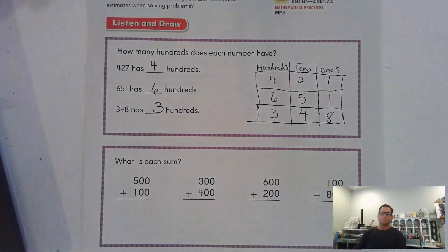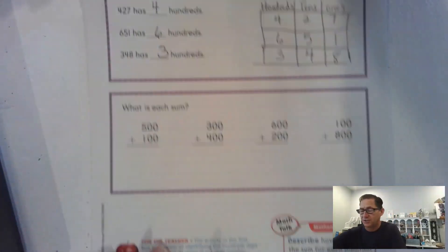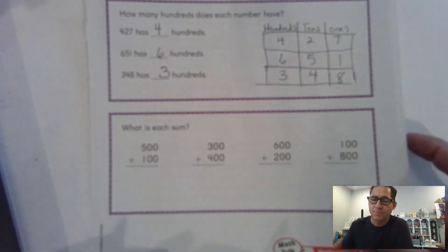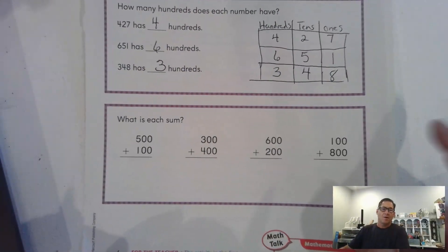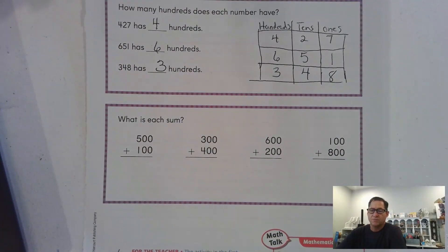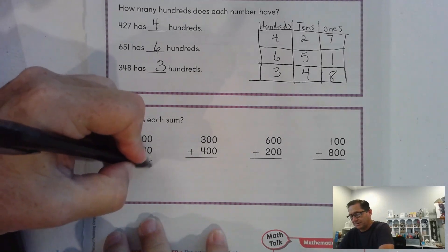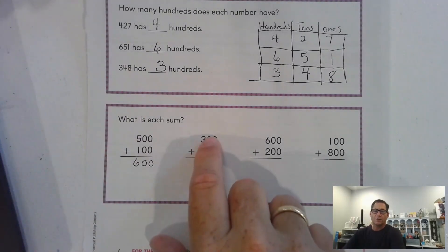Three hundreds. Alright. So we do need to know which place value is the hundreds for today's lesson. So what is each sum? 500 plus 100 more. Well, don't we just have to add the hundreds? Yeah, and that's a basic math fact. 5 plus 1 is 6. So, 600.